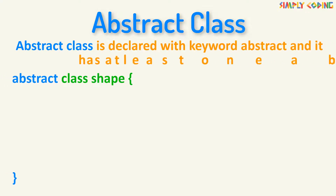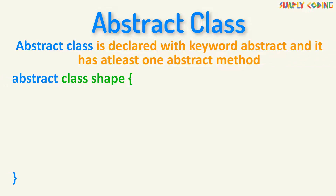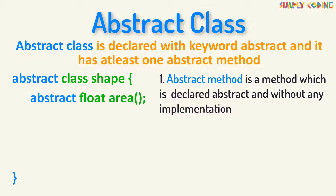An abstract class is declared with the keyword abstract and it has at least one abstract method. An abstract method is a method which is declared abstract without any implementation. So in this class Shape, area is an abstract method and you just put a semicolon after the declaration.